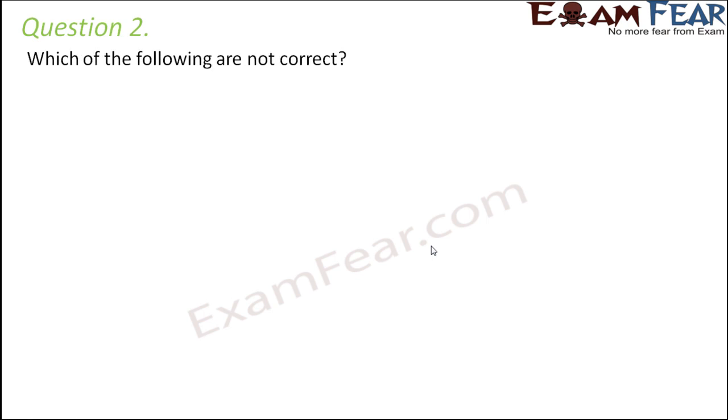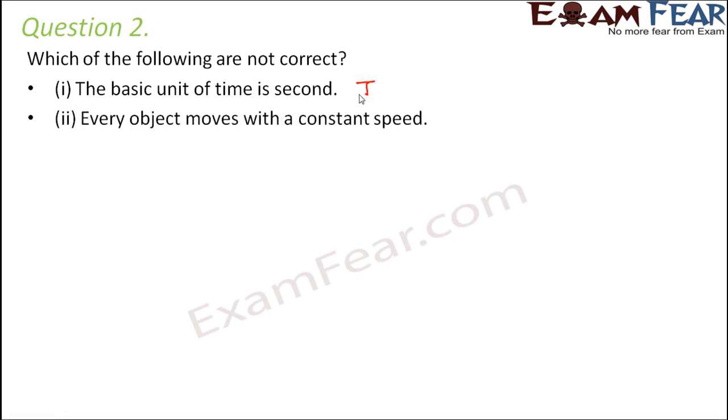Question number two. Which of the following are not correct? The basic unit of time is second. Yes, that is true. Second is the basic unit of time. Every object moves with a constant speed. No, this is false. This is not correct because different objects have different speeds and it is not necessary that the speed will remain the same.